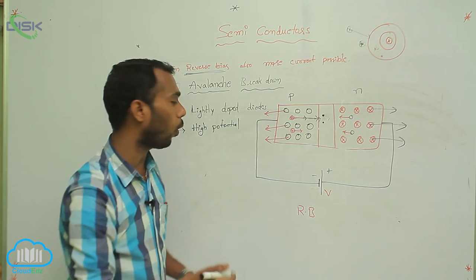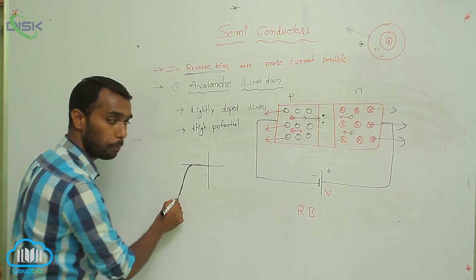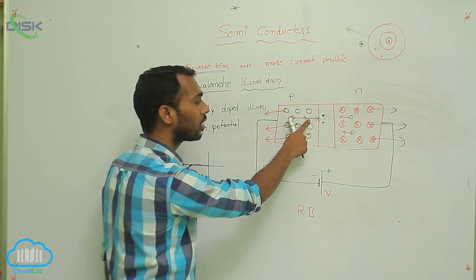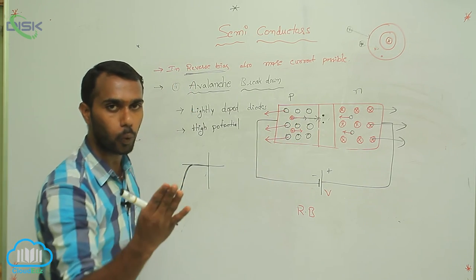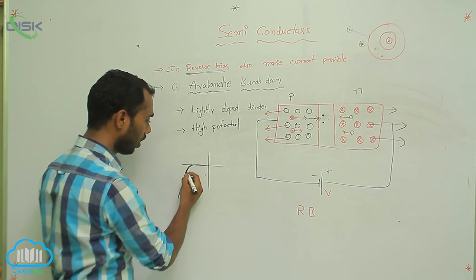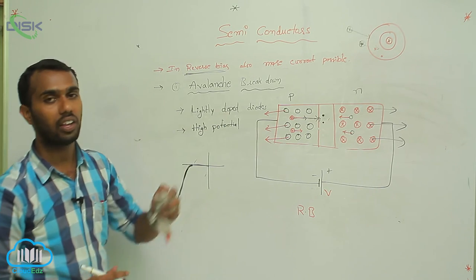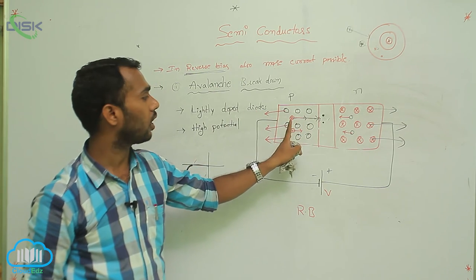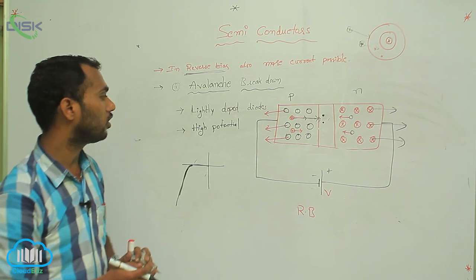If the number of electrons increases, automatically current is more. That is why in reverse bias we get more current. One electron makes a collision resulting in two electrons; those two make further collisions to become four, and so on. In this way, number of electrons keeps increasing. This is called avalanche breakdown — it takes place because of collision between minority charge carriers and atoms.